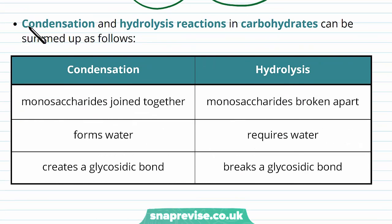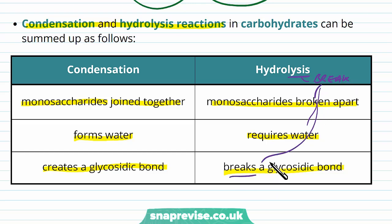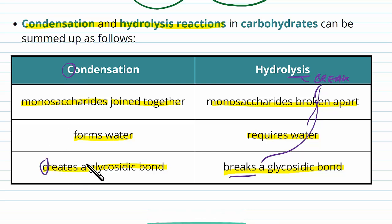Here's a summary comparing condensation and hydrolysis for carbohydrates. In condensation, monosaccharides are joined together; in hydrolysis, monosaccharides are broken apart. Condensation makes water; hydrolysis needs water. Condensation creates a glycosidic bond; hydrolysis breaks a glycosidic bond. Remember: lysis means to break, and condensation starts with C — you can think of C for create.